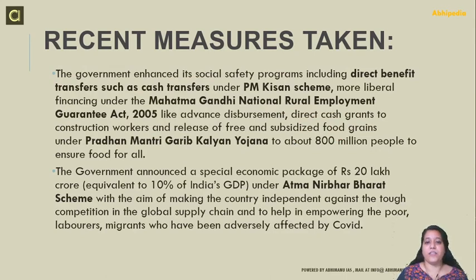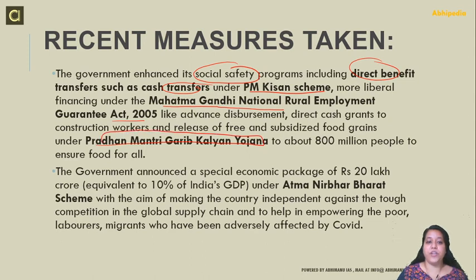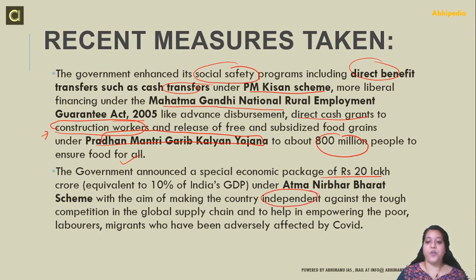The government is working through various social safety programs. These include direct benefit transfers such as cash transfers under PM Kisan Yojana, and the Mahatma Gandhi National Rural Employment Guarantee Act (MGNREGA). The government also released a special economic package of 20 lakh crore — equivalent to 10% of India's GDP — under the Atmanirbhar Bharat scheme, aimed at making the country self-reliant and helping empower poor labourers and migrants adversely affected by COVID-19.